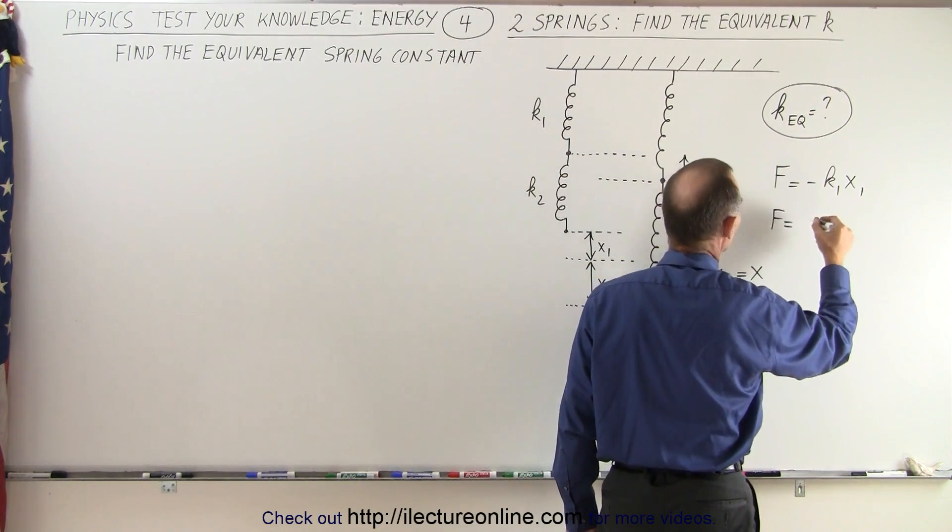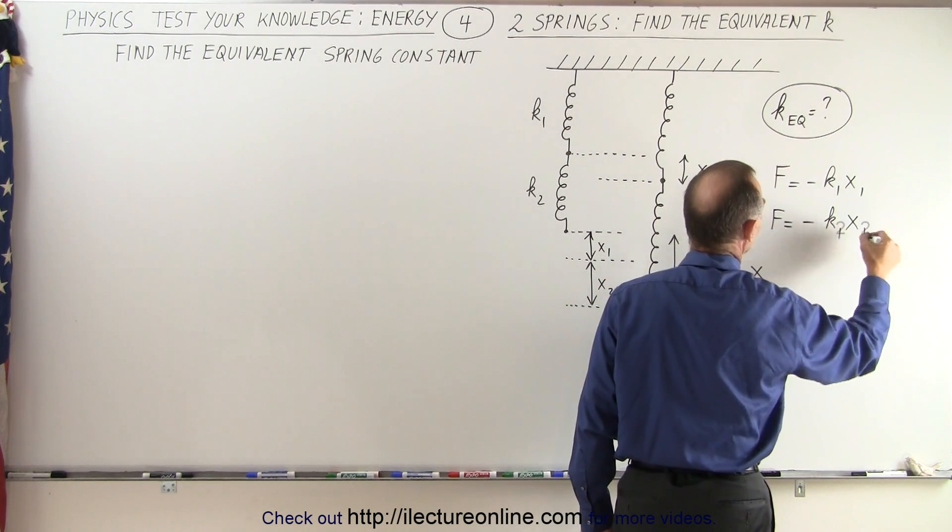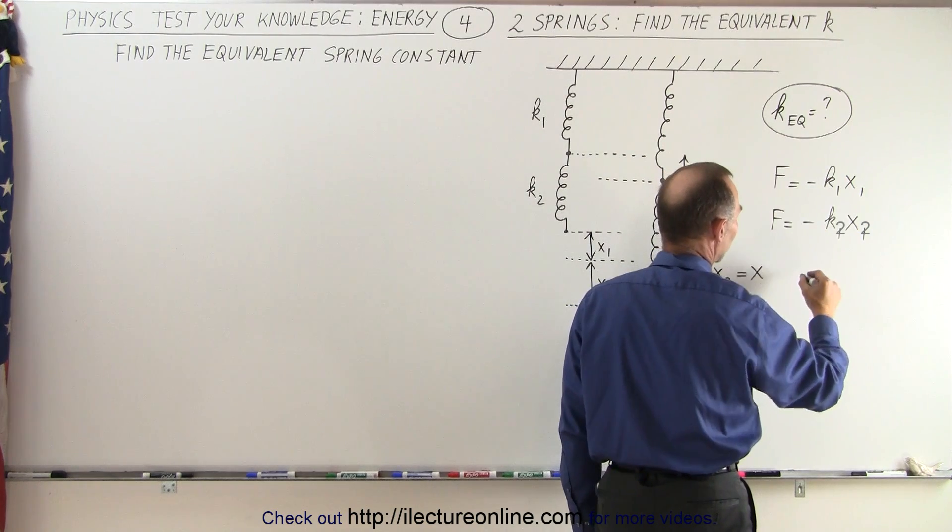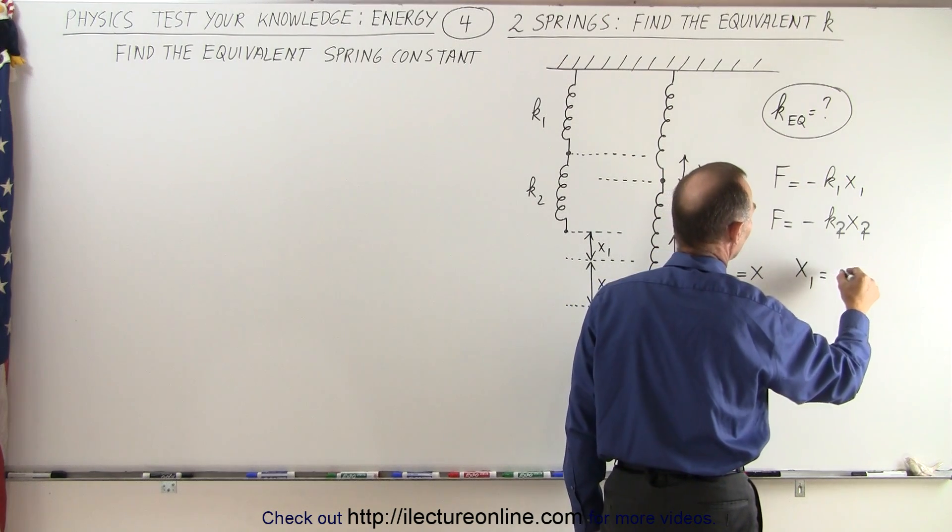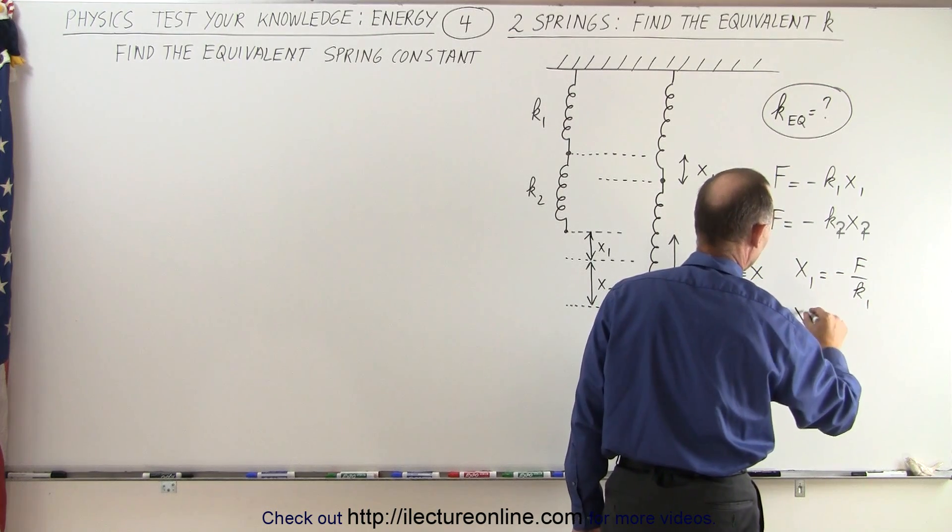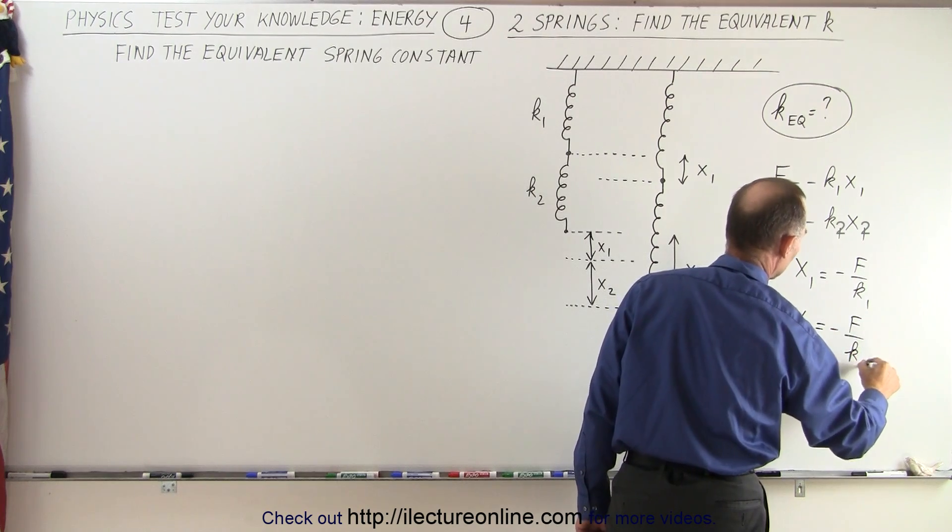And we can say that F applies to the second spring in the same way, so it's F equals minus k1 times x1, which means that we can solve these two equations for x1. x1 can be written as minus F over k1, and we can write x2 as being minus F over k2.